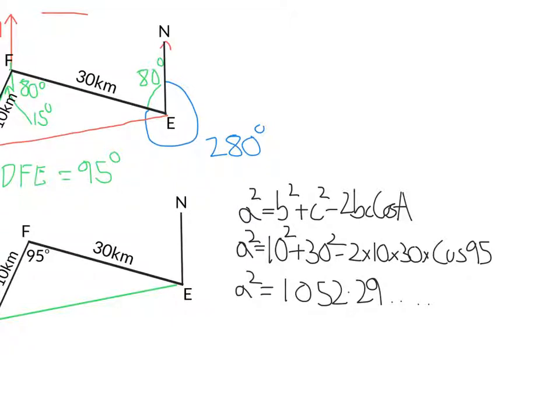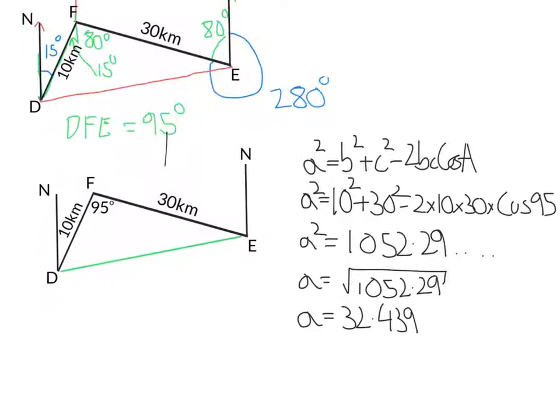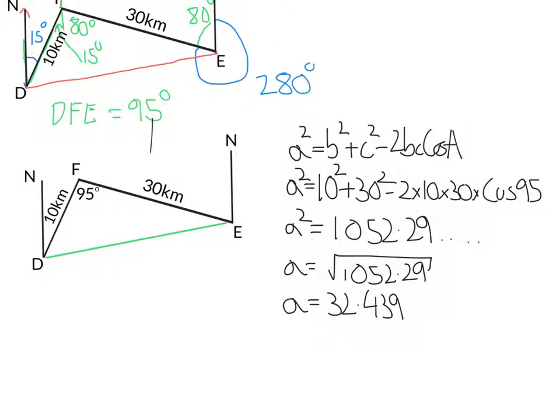And then we square root that to find A. So that's square root 1052.29. Remember to use the exact number that's in your calculator, not the rounded one. And you would get 32.439. So looking at our bit again, A in this case is DE. So DE is 32.4 kilometres to three significant figures.